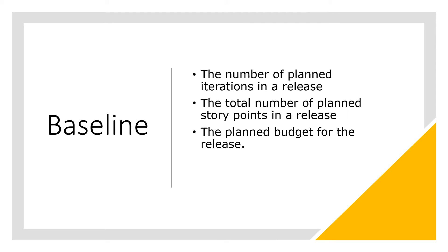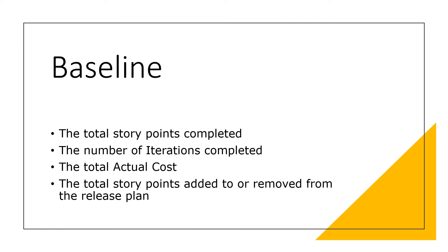Let's see what our baseline is. We are using three data points to establish the initial baseline: the number of planned iterations in a release, the total number of planned story points in a release, and the planned budget for the release. In order to calculate the EVM agile metrics, four measurements are needed: the total story points completed, the number of iterations completed, the total actual cost, and the total story points added or removed from the release plan.